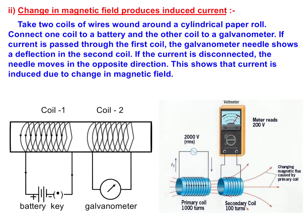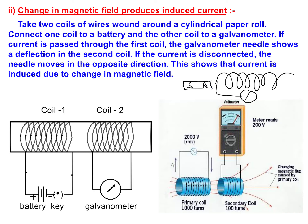So far, we know that if we have a relative motion between a coil — suppose this was the coil — and a magnet, then we can have a flow of electric current in this coil.